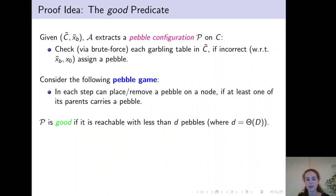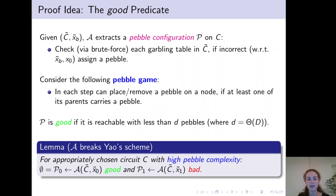Having this pebble game in mind, we then define a pebble configuration to be good if it is reachable with less than d pebbles where d is some threshold that is linear in the depth of the circuit. We then prove that for appropriately chosen circuit C with high pebble complexity, the adversary will extract a good pebbling configuration when it receives a garbling of x0 and a bad configuration when it receives a garbling of x1. Note that clearly the adversary by construction will extract an empty pebbling configuration whenever it receives an honest garbling of the circuit and x0.